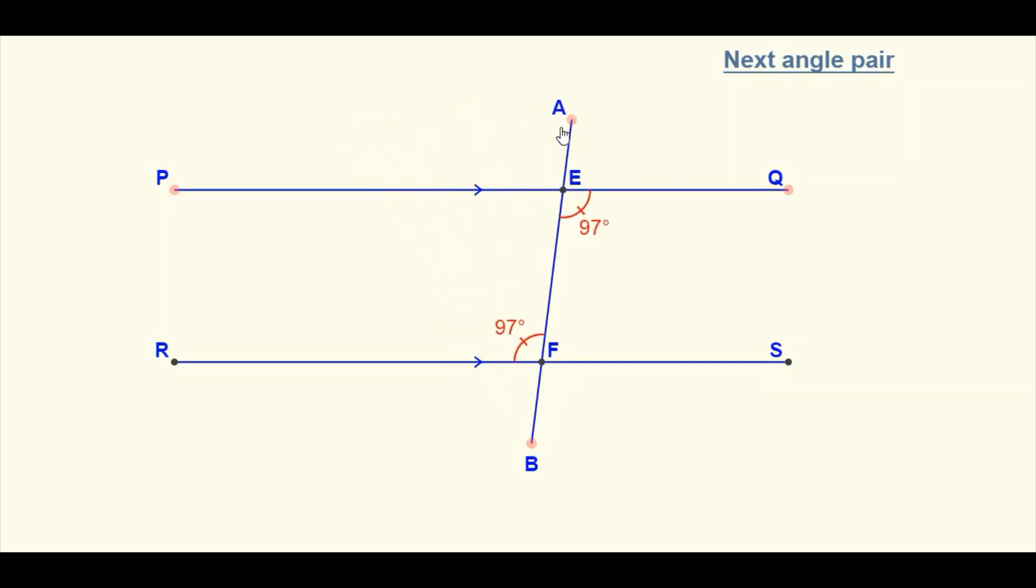then you notice if I move it until it is perpendicular, then both angles are still alternate. Both of them will equal 90 degrees in this case. If I continue,